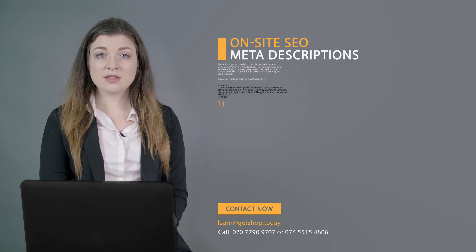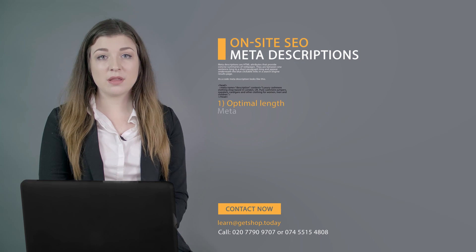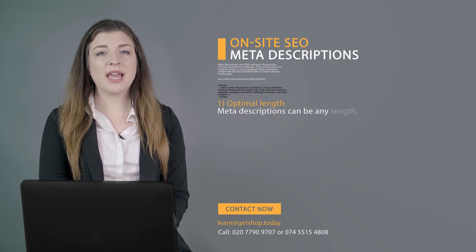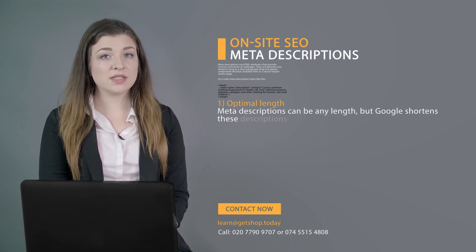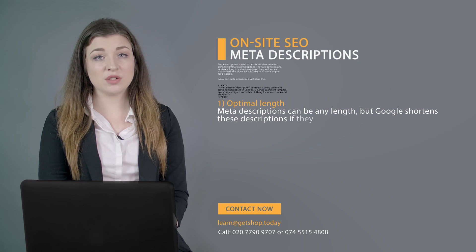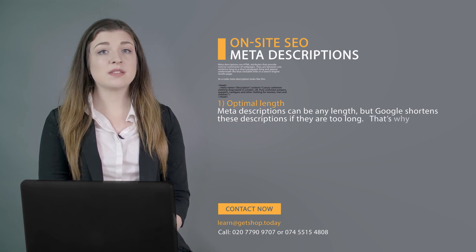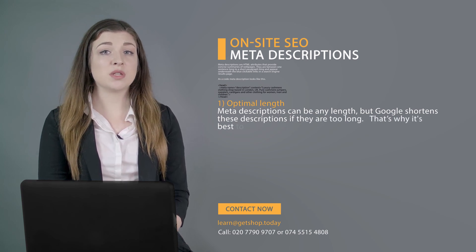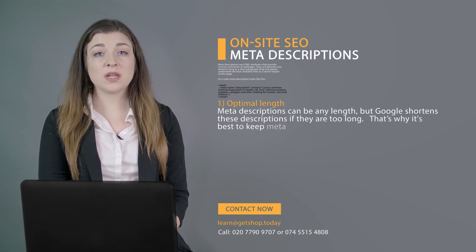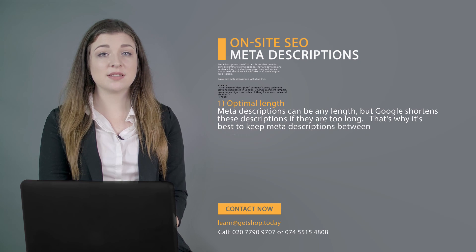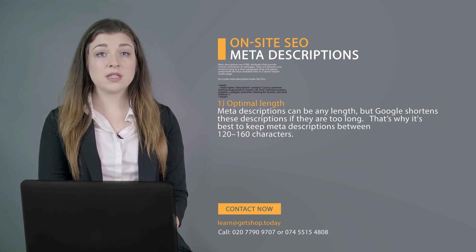First, optimal length. Meta descriptions can be any length, but Google shortens these descriptions if they are too long. That's why it's best to keep meta descriptions between 120 to 160 characters.